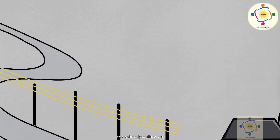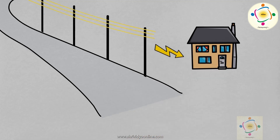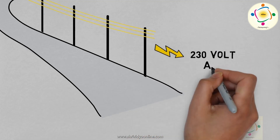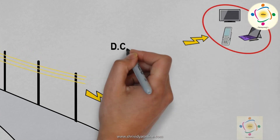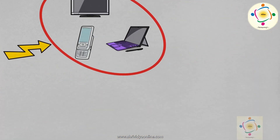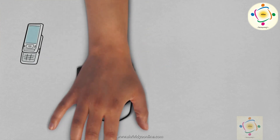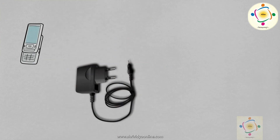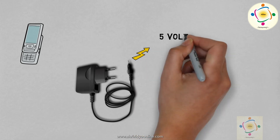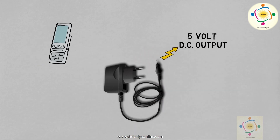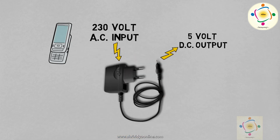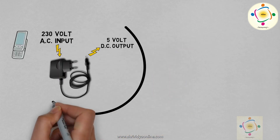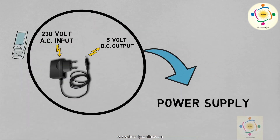We all know that the supply voltage we get from the electricity board is 230V AC, and most of our instruments work on small DC voltage. For example, consider a mobile charger that we all use regularly. It gives 5V DC output — we give 230V AC to the mobile charger and we get 5V DC from it. Want to know how this conversion takes place? This is called power supply.